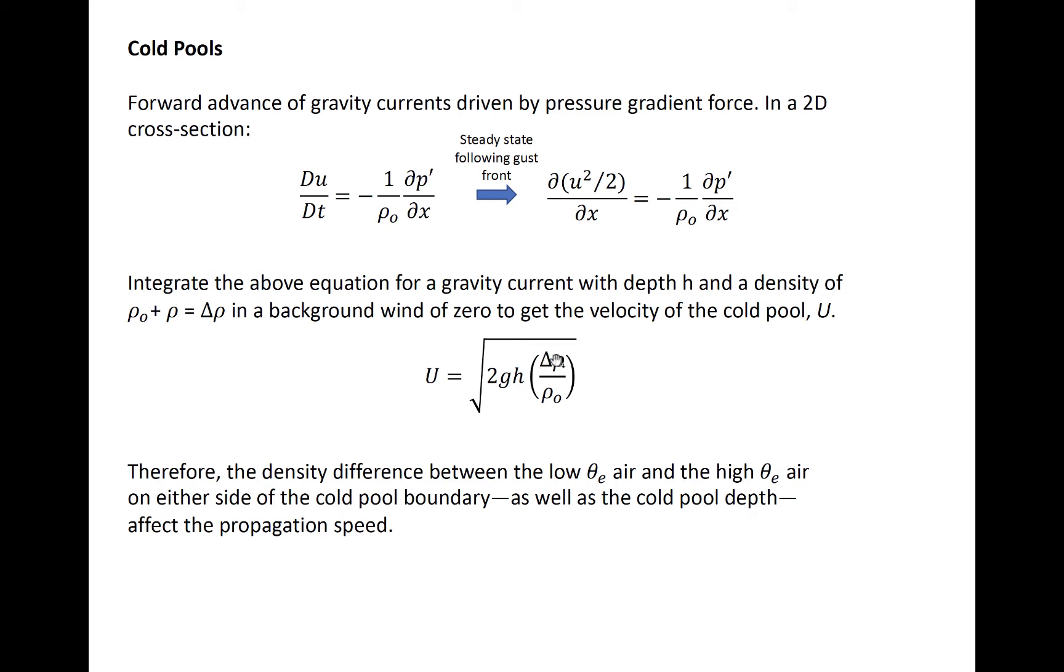The difference in density across the boundary of the cold pool is controlled by both temperature and moisture, and so we consider the difference in theta-E between the cold pool and its environment. A large difference in density, or cold or relatively dry current, will propagate more quickly into the environmental air. Gravity currents also propagate more quickly as they grow deeper.